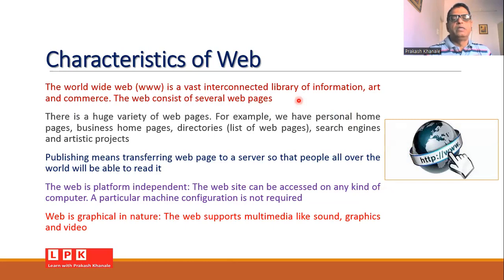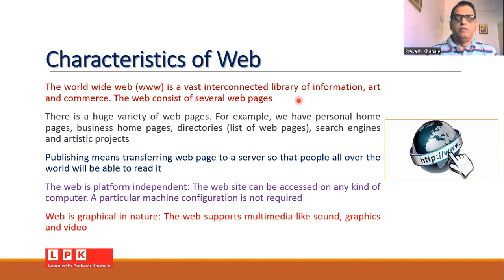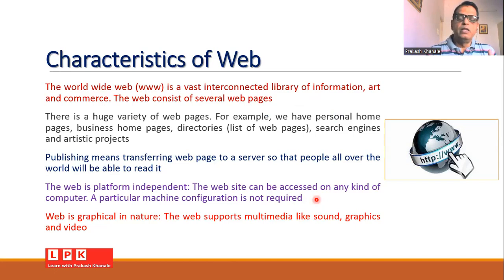The worldwide web is a connection of a large number of web pages. There is a huge variety of web pages — personal web pages, business web pages, directories, and even a search engine is a kind of web page. Publishing means transferring information to the server, so that people all over the world can access it. The web is platform independent — it doesn't depend on the type of hardware or platform you use to access it, and no particular machine or corporation is required.